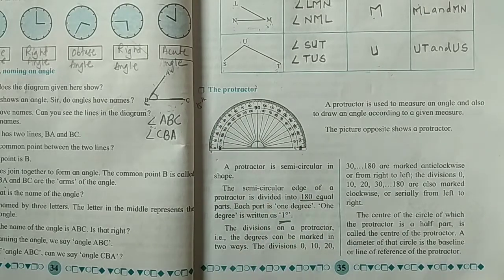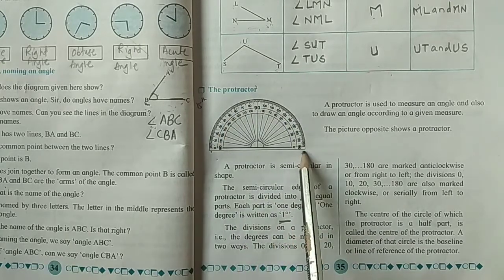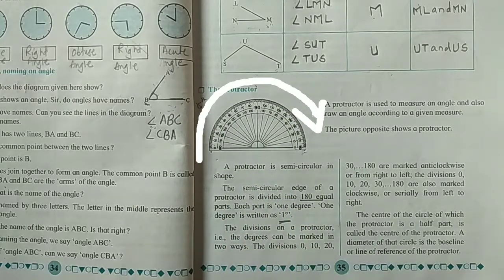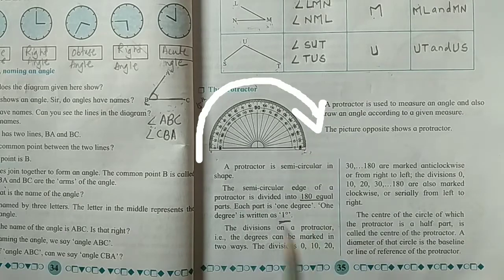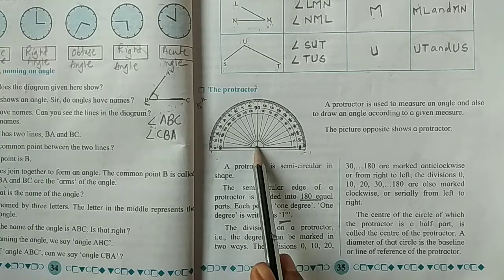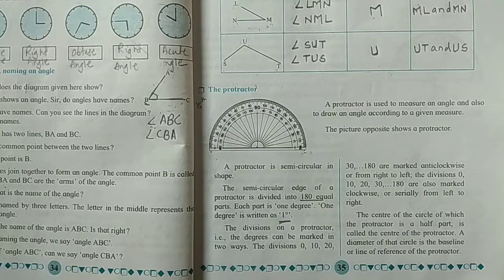The divisions 0, 10, 20, 30, and 180 are also marked clockwise or serially from left to right. The center of the circle of which the protractor is a half part is called the center of the protractor. A diameter of that circle is the baseline or reference of the protractor.